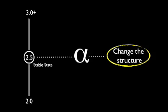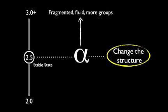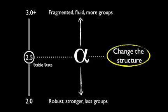Taking it forward: how do we change it? How do we end a war like Iraq? Alpha is the structure. It's got a stable state at 2.5 — this is what wars look like when they continue. We've got to change that. We can push it up: the forces become more fragmented, there's more of them but they're weaker. Or we push it down: they're more robust, there are fewer groups, but perhaps you can sit and talk to them.